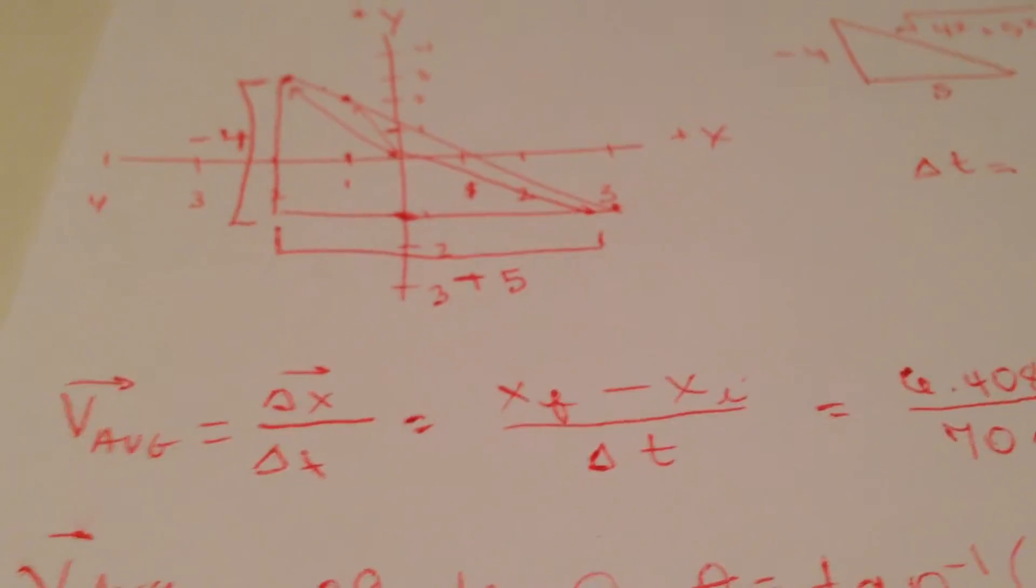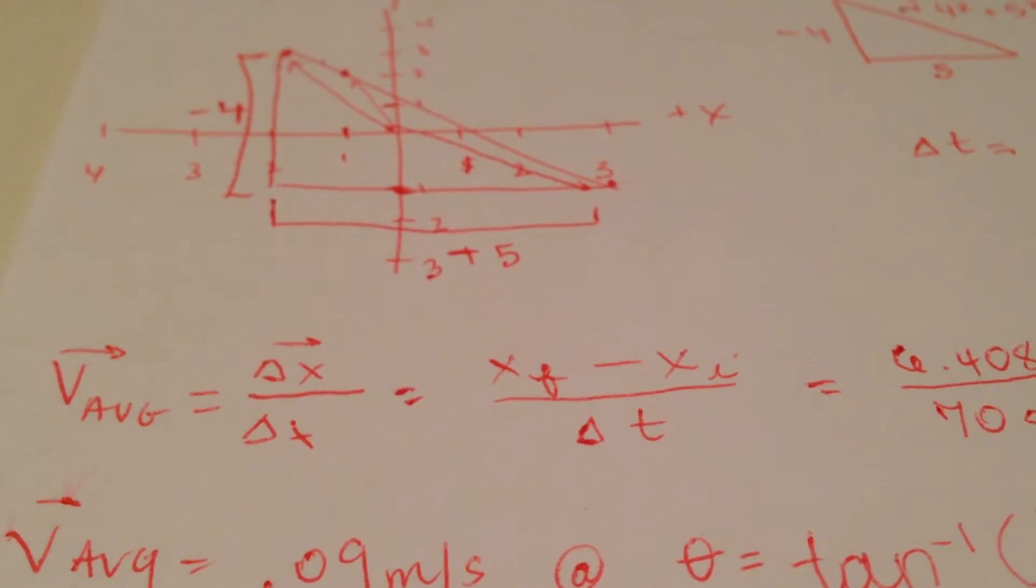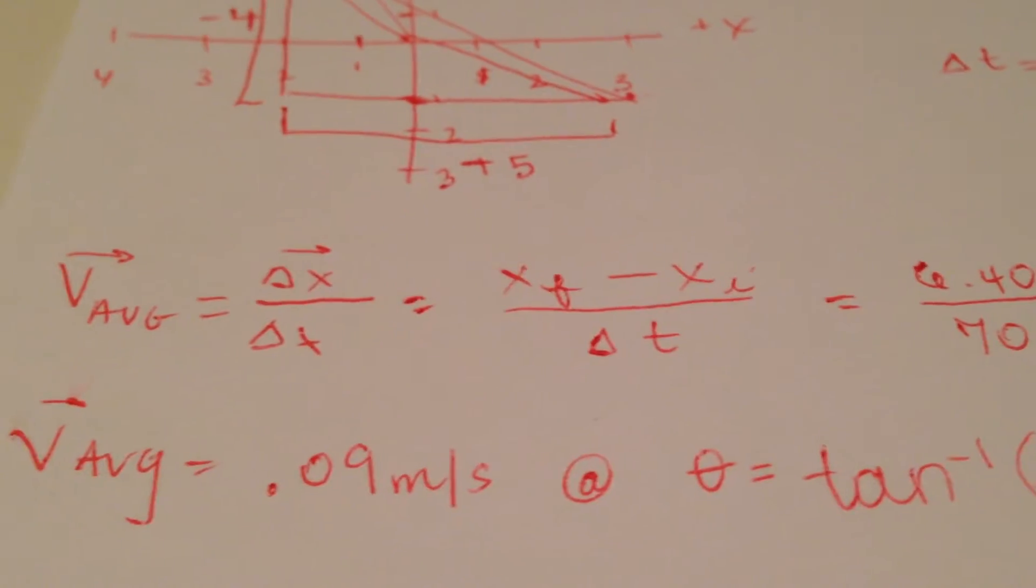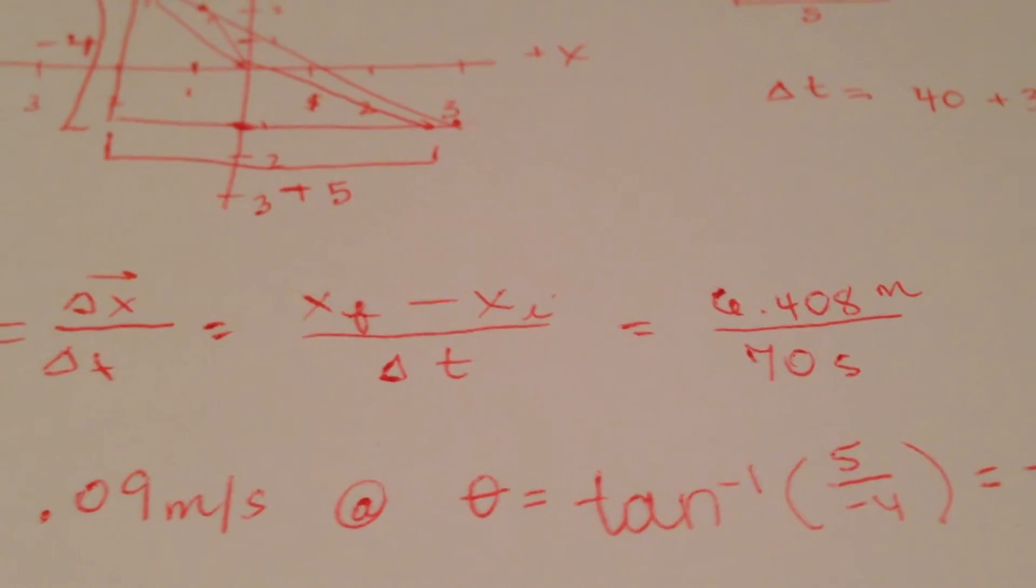Because it asks for average velocity not average speed we're going to need to add a direction to that. So that little delta also means the change, so final minus initial.